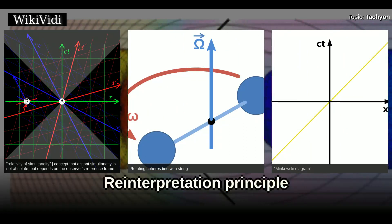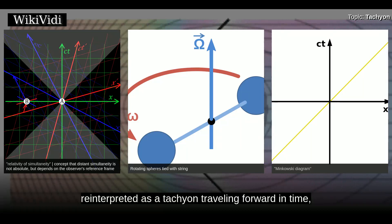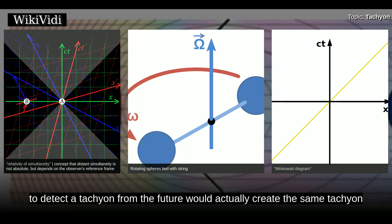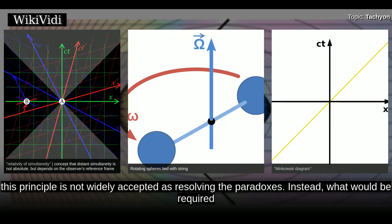Reinterpretation principle. The reinterpretation principle asserts that a tachyon sent back in time can always be reinterpreted as a tachyon traveling forward in time, because observers cannot distinguish between the emission and absorption of tachyons. The attempt to detect a tachyon from the future would actually create the same tachyon and send it forward in time. However, this principle is not widely accepted as resolving the paradoxes.